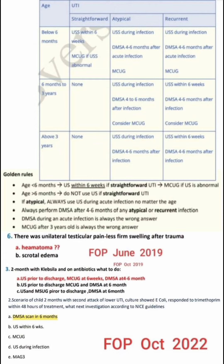For exam questions: first, unilateral testicular pain with less firm swelling after trauma — they are telling that it is hematoma. Next question: 2 months old with Klebsiella on antibiotic, what to do? Ultrasound prior to discharge and MCUG at 6 weeks, DMSA at 4 to 6 months, given the age is 2 months. Next question: a child 2 months with second attack of lower UTI, culture showed E. coli, responded to trimethoprim within 48 hours. What next according to NICE guidelines? That is DMSA scan in 6 months.